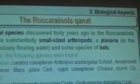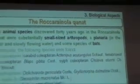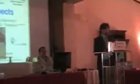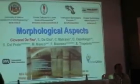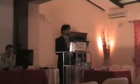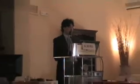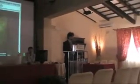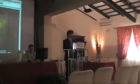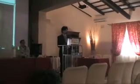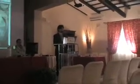The animal species discovered in the Roca-Rino canal were substantially small-sized arthropods, a planaria, and some species of plants. The depth of the shafts increases progressively going further from the entrance, with the last one being the deepest. The average depth of the shafts is 14.7 meters, with a minimum depth of 4.7 meters and 40 centimeters, and a maximum depth of 22 meters and 40 centimeters.